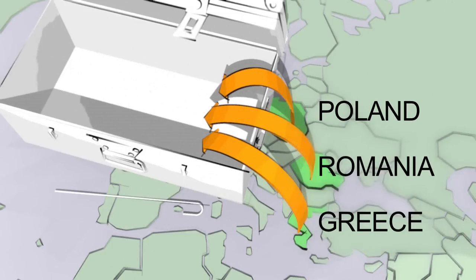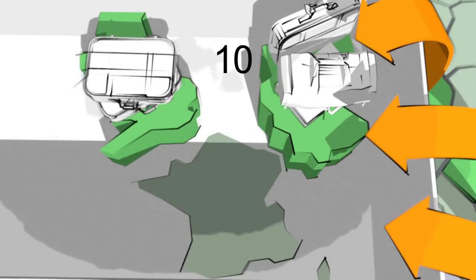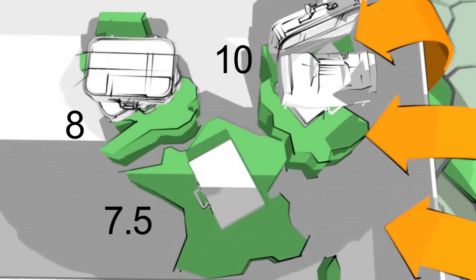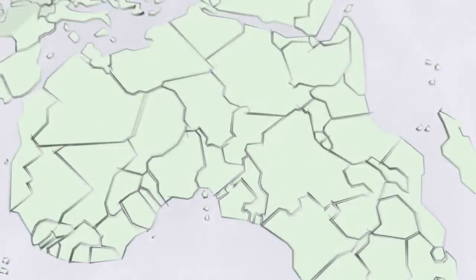The countries receiving the greatest share of migrants are Germany with 10 million, Great Britain with 8 million, and France with 7.5 million. Immigration to these countries has now far exceeded those to traditional immigrant destinations like Canada, Australia, and New Zealand.